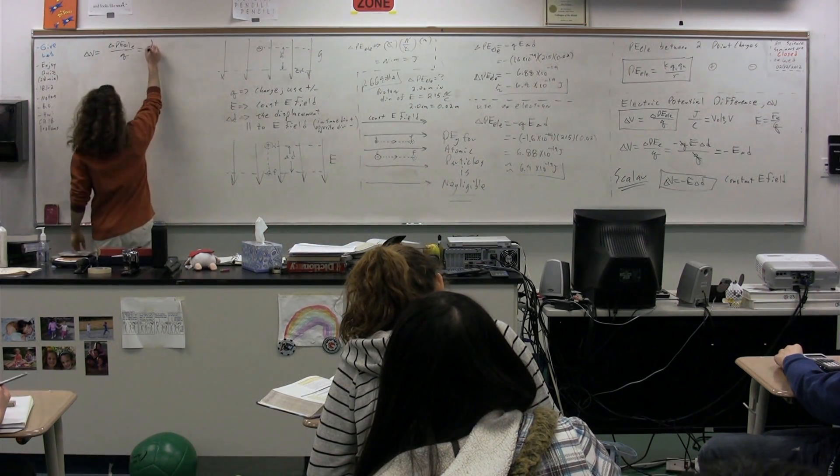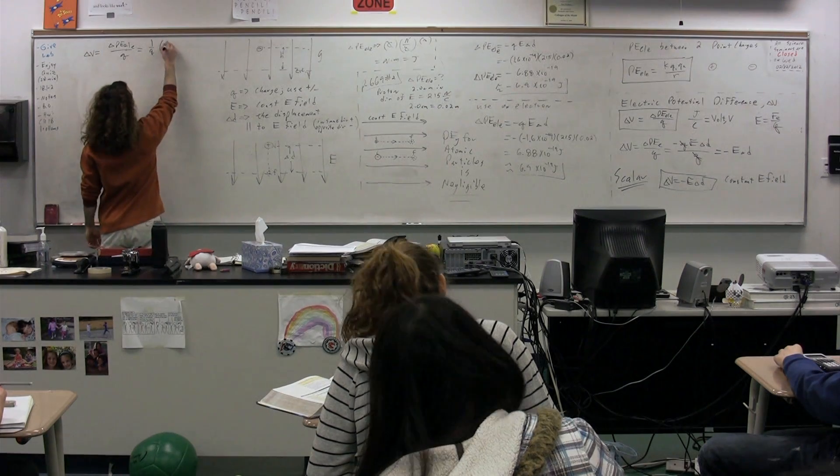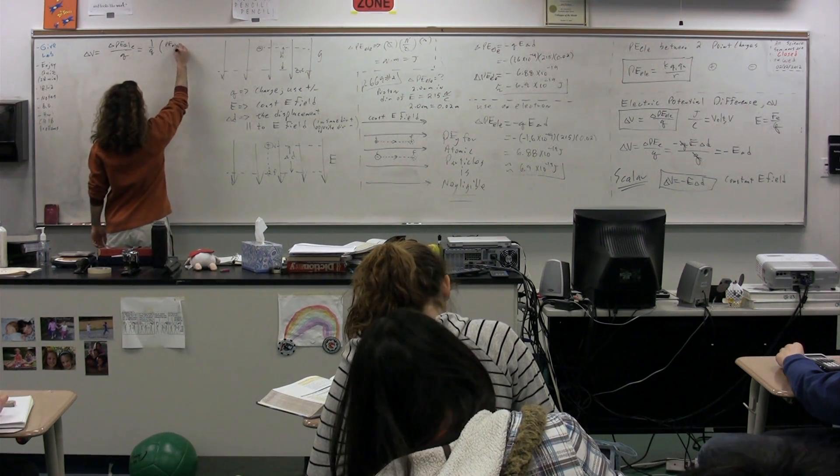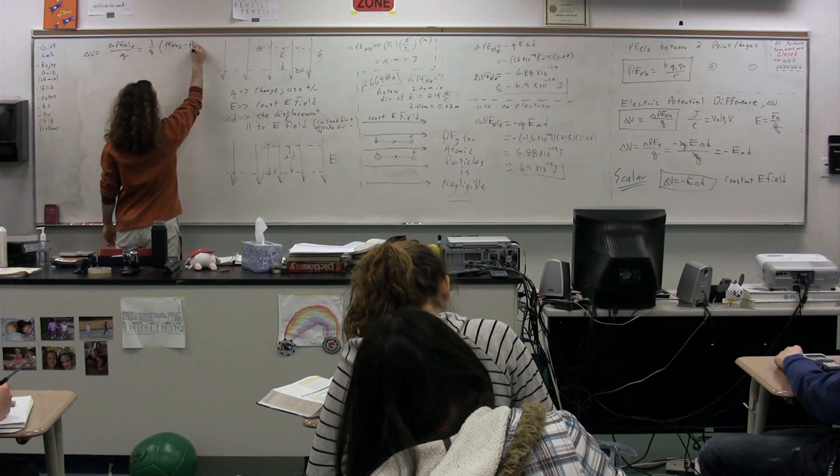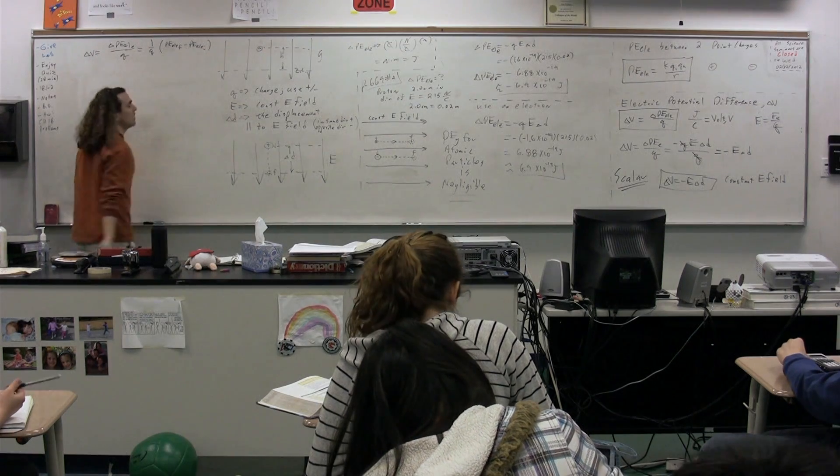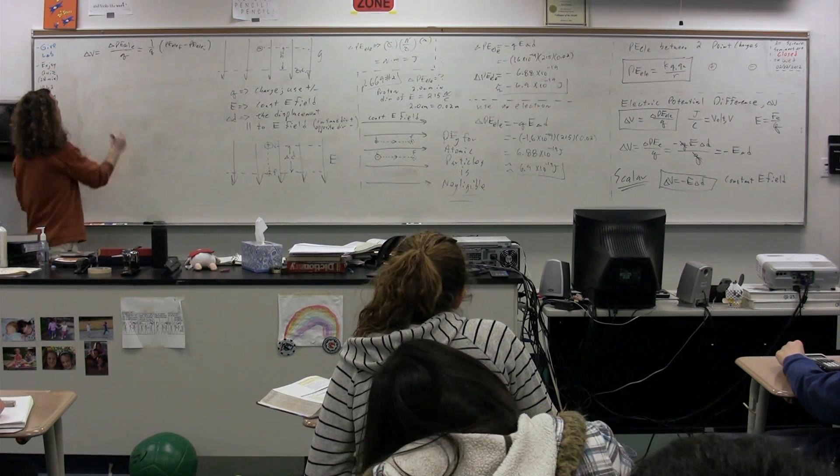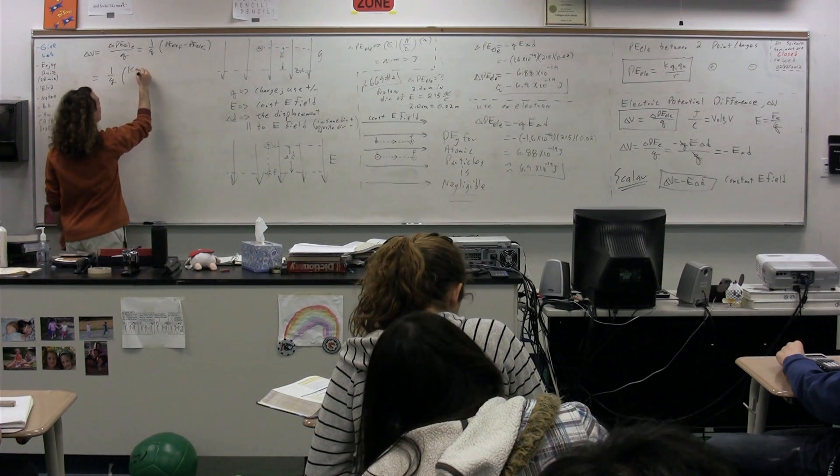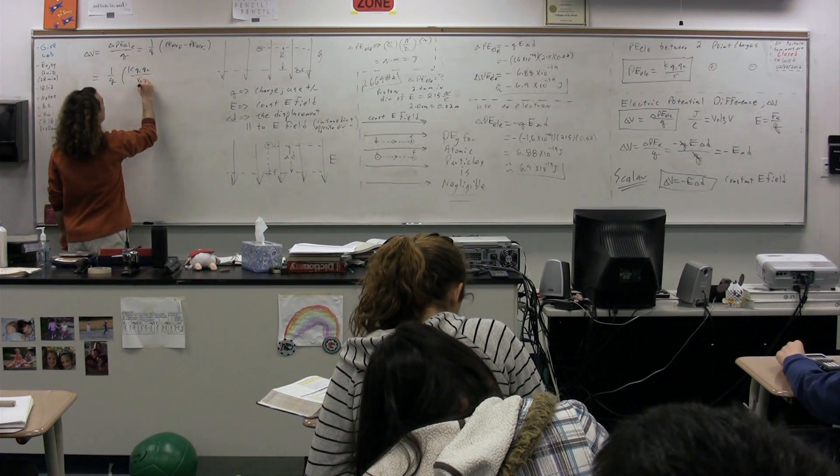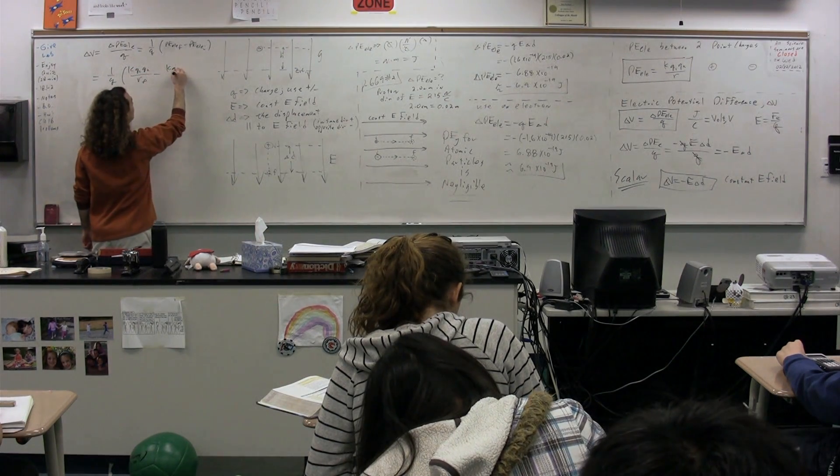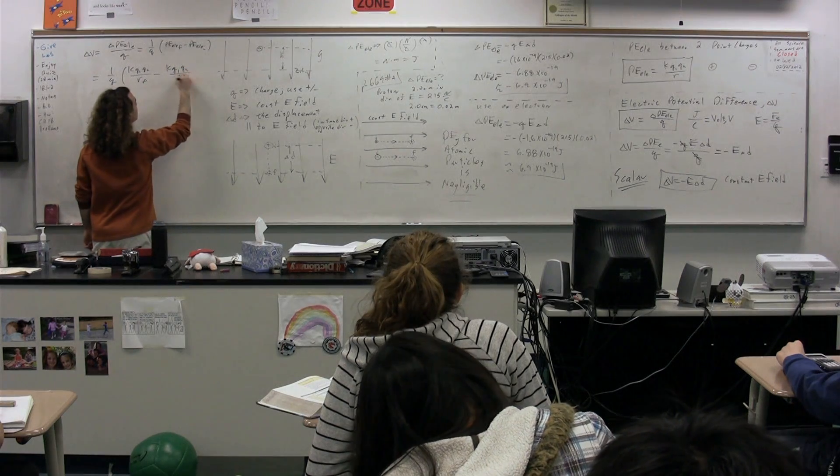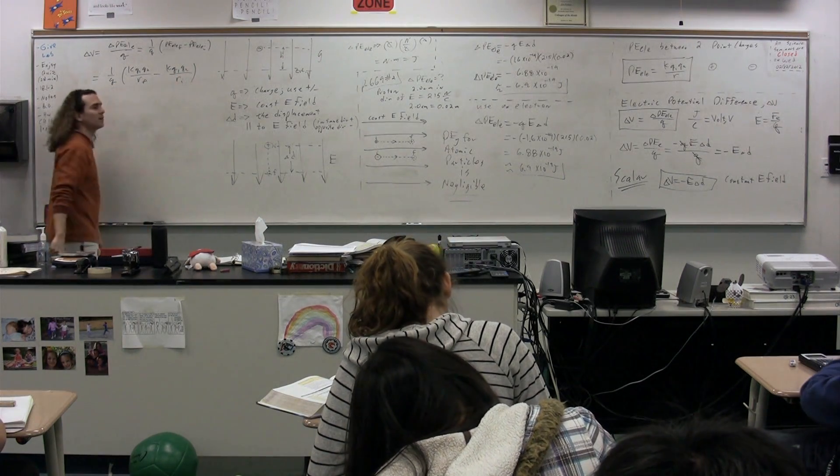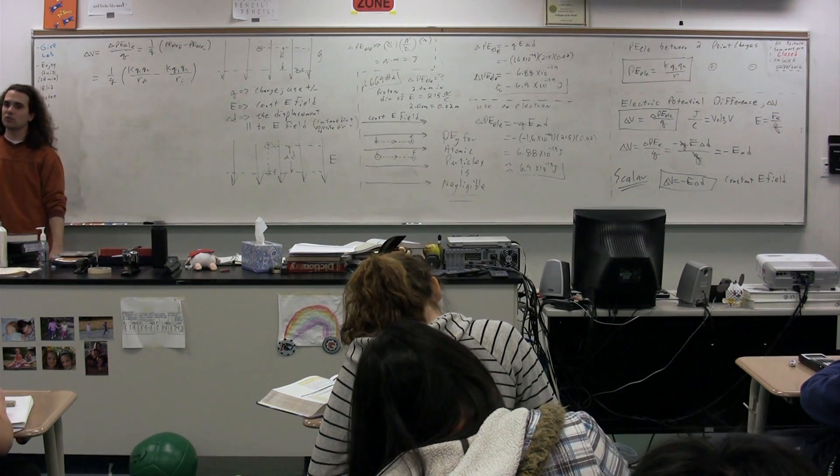In order to do that, we're going to have 1 over Q multiplied by the electric potential energy final minus the electric potential energy initial, which is what change in means. Which is equal to 1 over Q multiplied by KQ1 times Q2 over R final minus KQ1 times Q2 over R initial. Just final minus initial, plugging in the equation for two-point charges.